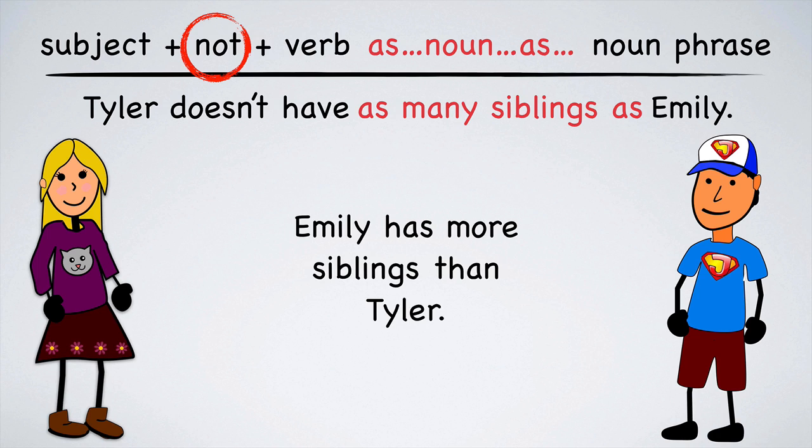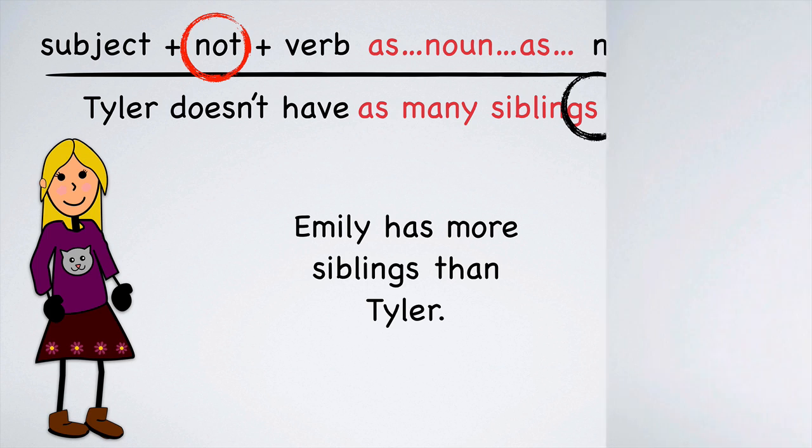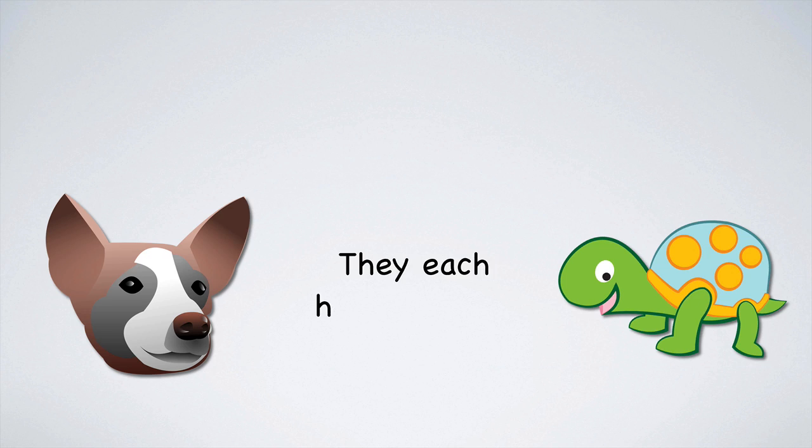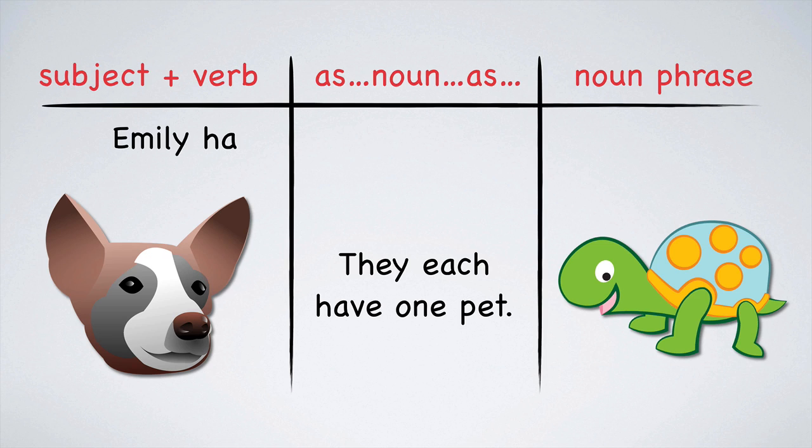Notice how even though Tyler does not have any siblings, we still need to use a plural noun. This is because many must always be followed by a plural noun. Emily, how many pets do you have? I have a chihuahua named Chi Chi. And Tyler, how many pets do you have? I have a turtle named Horace. They each have one pet, so they have an equal amount of pets. Because it's equal, the sentence will be positive. Emily has as many pets as Tyler.